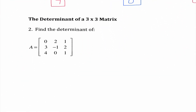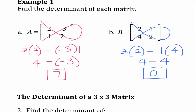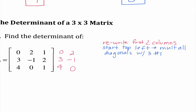Now the determinant of a three by three matrix is a little bit more complex — shocking, I know. So I'm going to write all of our steps off to the side and show what to do over here. I'm going to start by rewriting the first two columns: 0, 3, 4, then 2, negative 1, 0. Just like in our two by two matrix, we multiply every diagonal, and then subtract the products of the diagonals going the opposite direction from the top left.